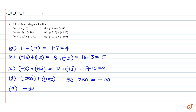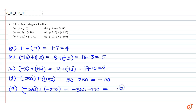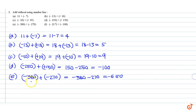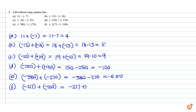Part e: minus 180 plus minus 270, which is equal to minus 180 minus 270, equal to minus 450. And minus 270 plus minus 100 is equal to minus 270 minus 100, which is equal to minus 370. These are our answers.